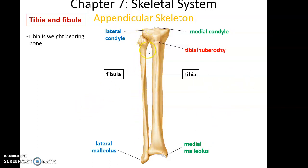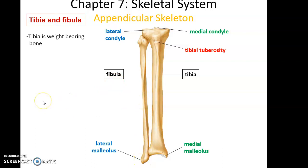Here is the fibula. At the distal end of the fibula, it has a rounded piece of bone tissue sticking down called the lateral malleolus. Since the fibula is lateral, it has the lateral malleolus. If you go down and feel your ankle, the big knob of bone sticking out on the outside of the ankle is the lateral malleolus of the fibula.